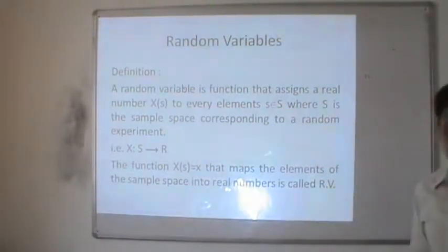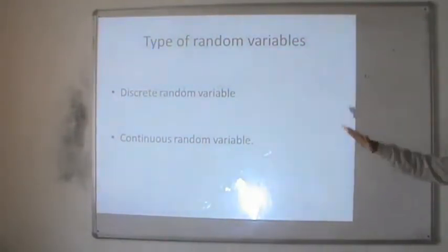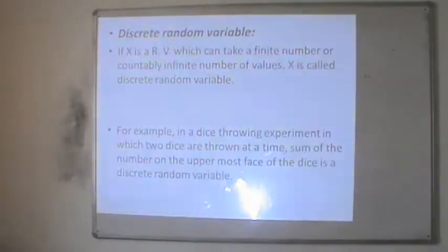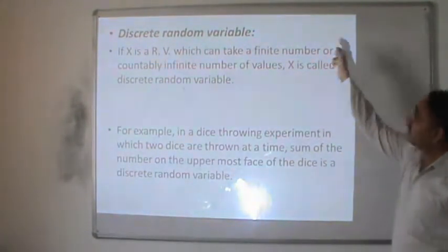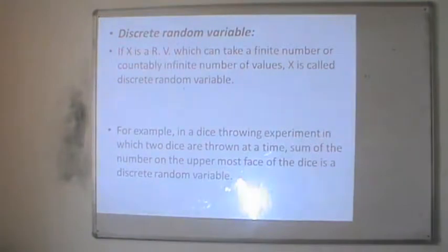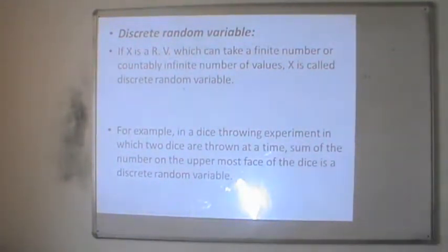So there are two types of random variables: first, discrete random variable, and second, continuous random variable. A discrete random variable is one where x is a random variable which can take a finite number or countably infinite number of values.